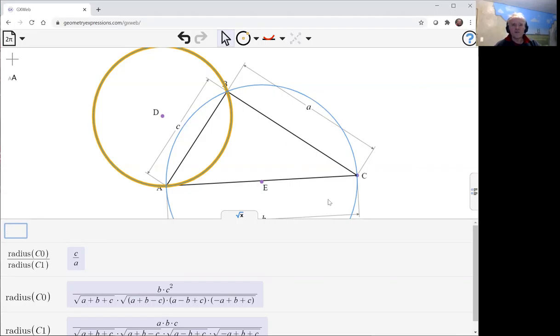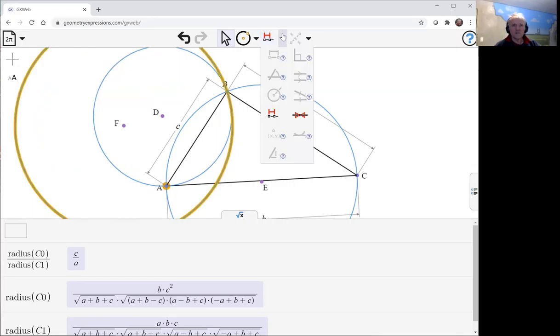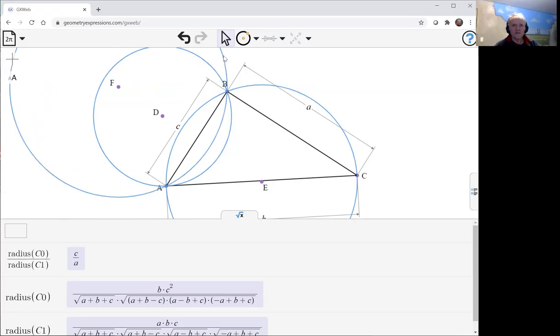And I'll leave it to you to work out what the other mixed linear circles would have. Notice that for every pair of vertices there are two mixed linear circles. You see, there's going to be one that goes through the two vertices and is tangential to the other side.